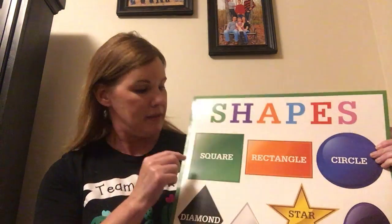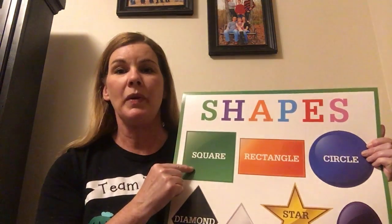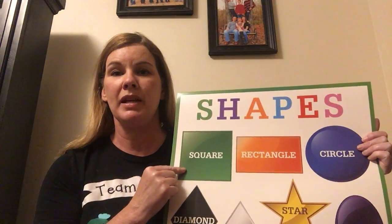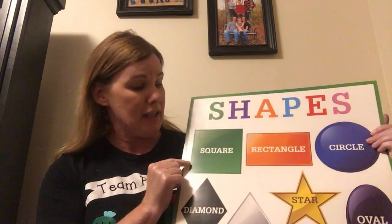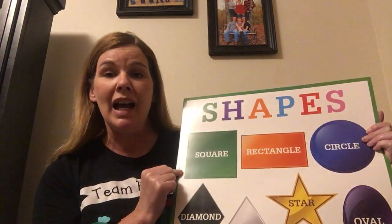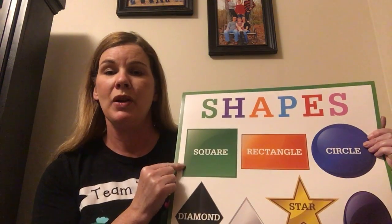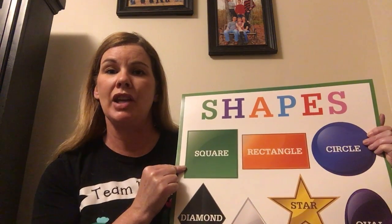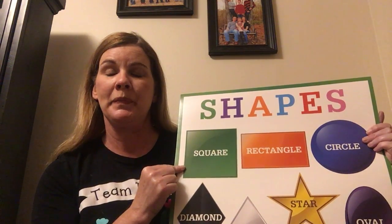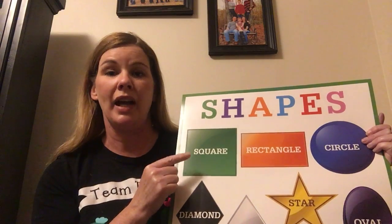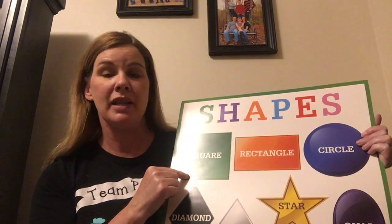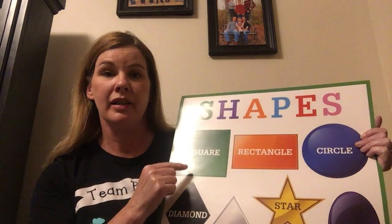Look at our shapes. Can you tell me what this shape is? It has four sides. All four sides are the same. What is this shape? This shape is a square.